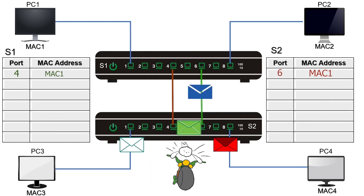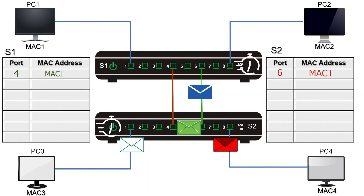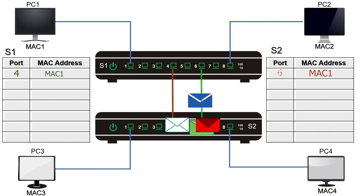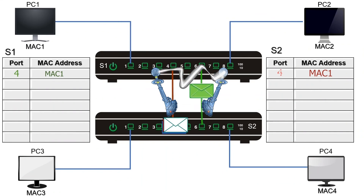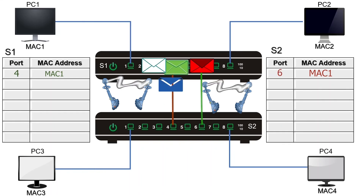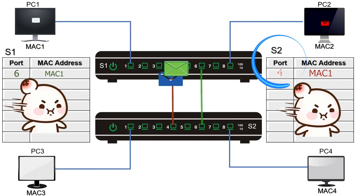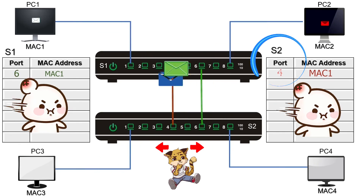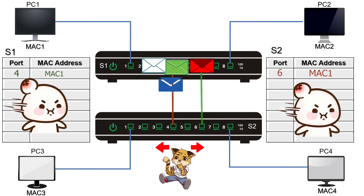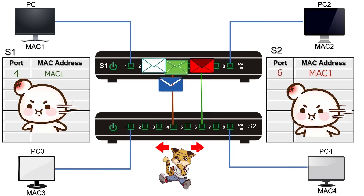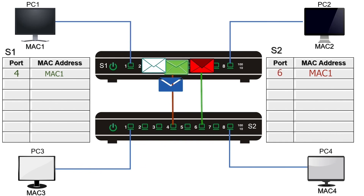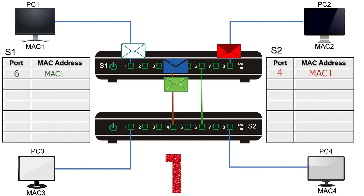Switches forward frames blazingly fast — they can forward millions of frames per second. This means this process can be repeated millions of times per second, creating a broadcast storm. A broadcast storm consumes most of the network bandwidth, and a few broadcast storms are enough to bring the entire network down. Since the switch updates the CAM table each time it receives a frame, it also makes the CAM table unstable. If the CAM table is unstable, the switch fails to make correct forwarding decisions. All these happen just because of a single broadcast frame.